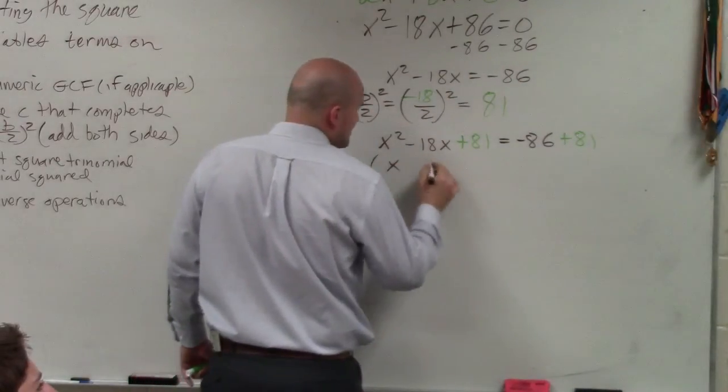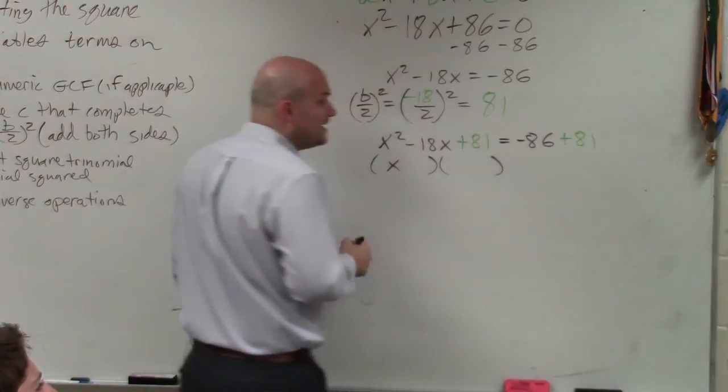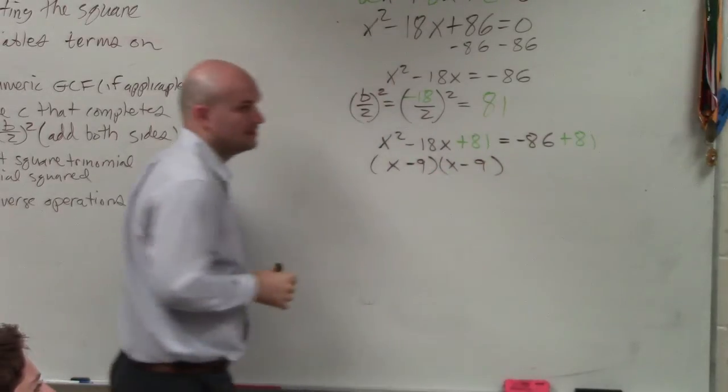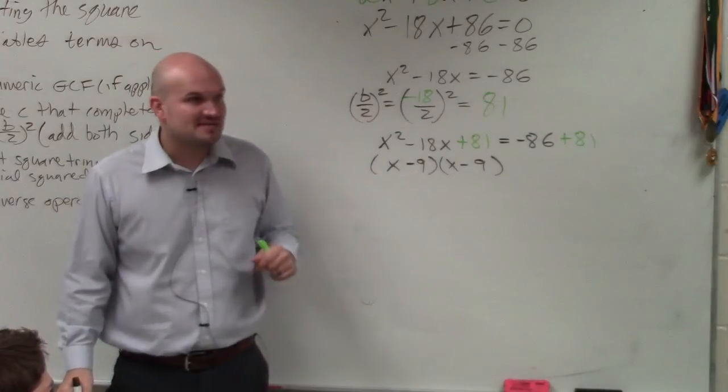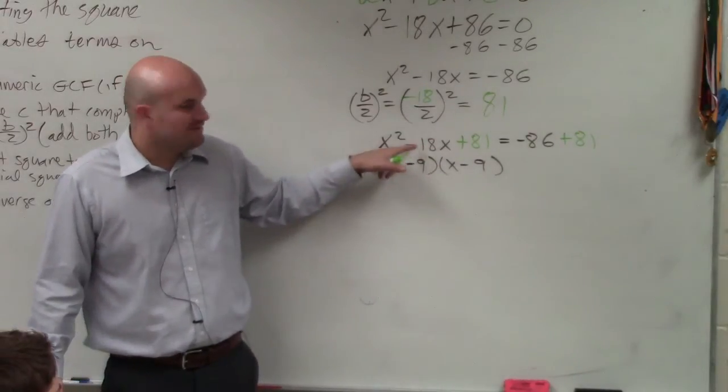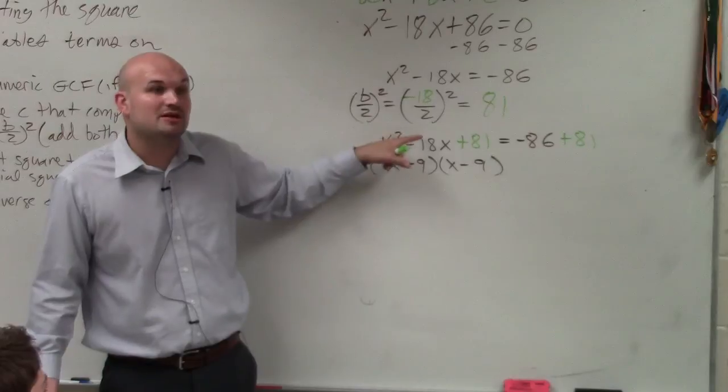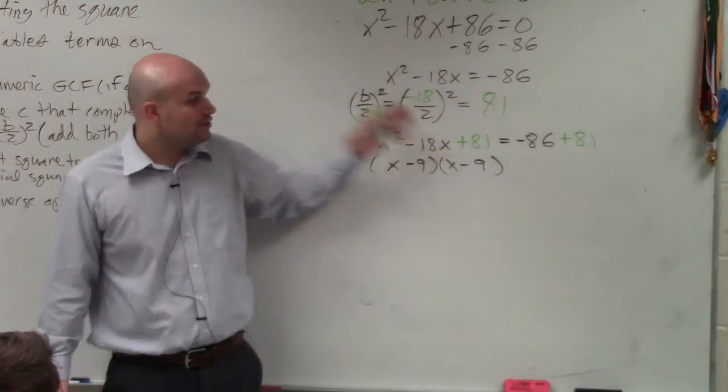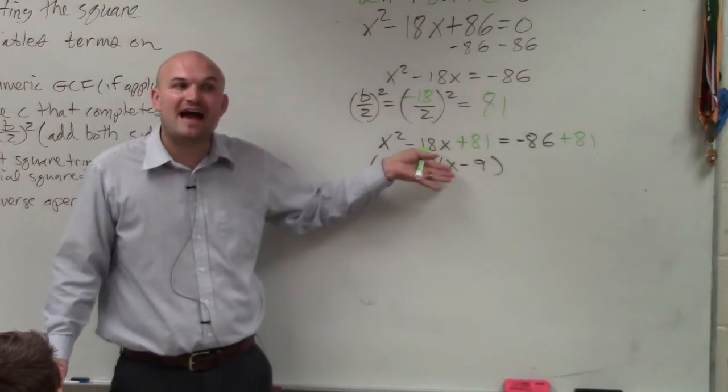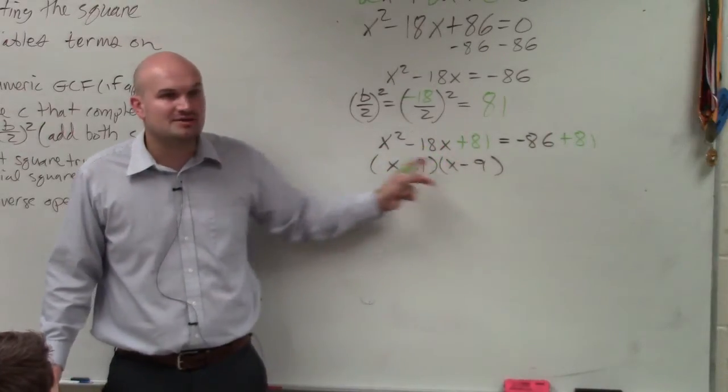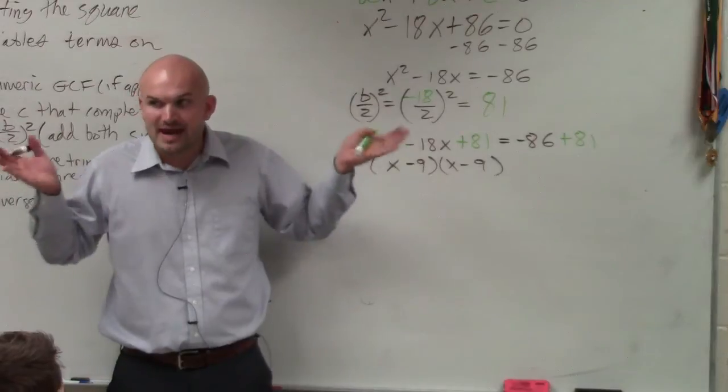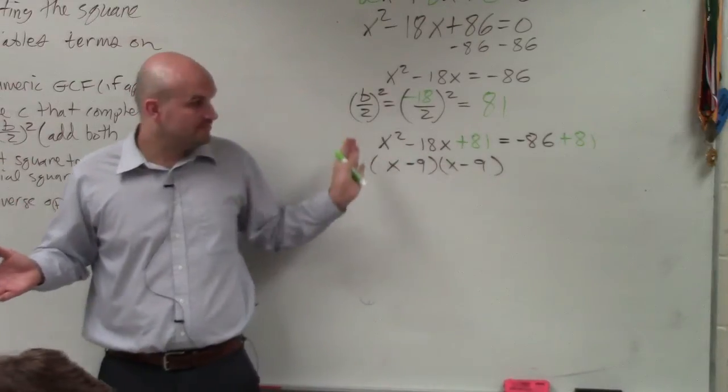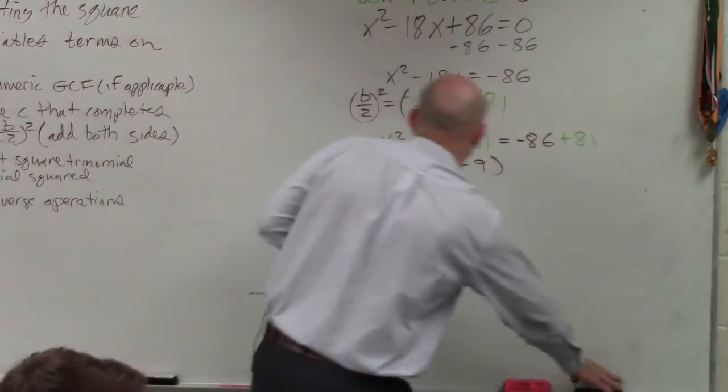All perfect square trinomials factor to give you two binomials that are exactly the same. x minus 9 times x minus 9. The reason why it's negative is because my middle terms are negative. If my middle term was positive, it would be x plus 9 times x plus 9. You always create a perfect square trinomial that can be factored into two binomials that are the same. This happens every single time. Perfect square trinomials. This is what we covered.